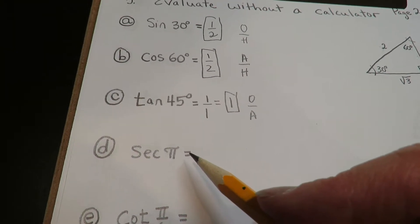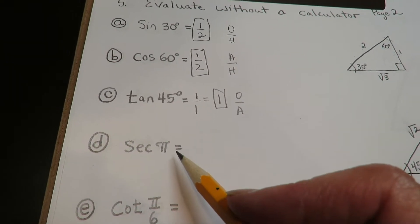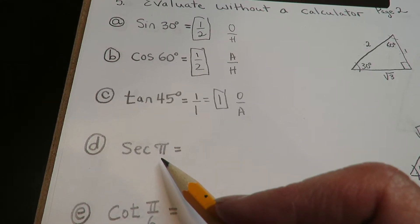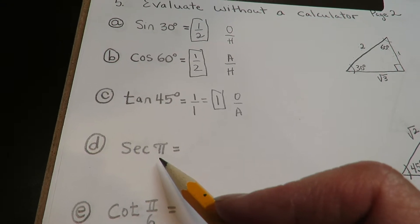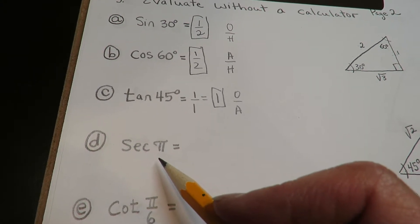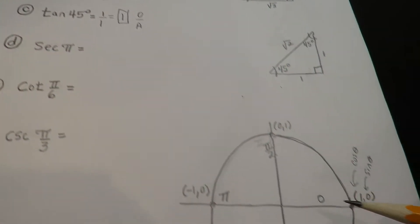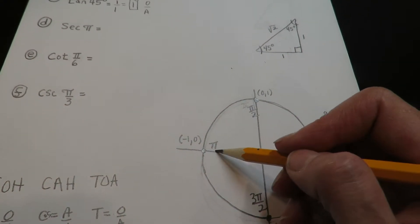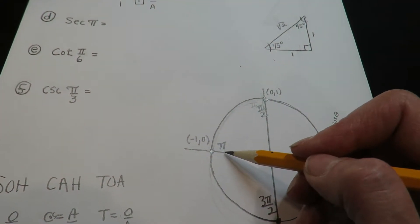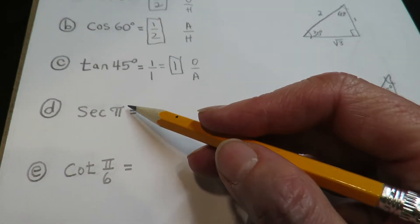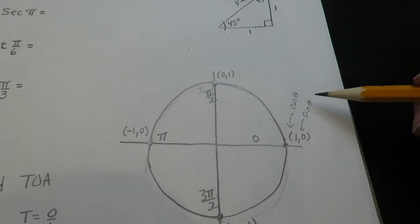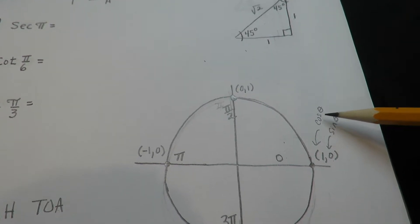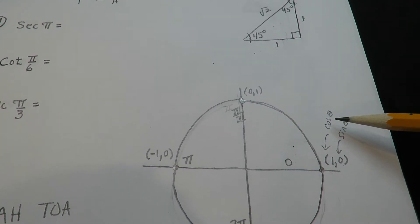Now, secant of pi. First of all, it's pi, so you have to know which tool to use. Pi is a quadrantal angle because it falls on one of the axes, and a good tool for that is the unit circle. You can see pi here on the unit circle. The only thing is, the unit circle is based off of cosine and sine.